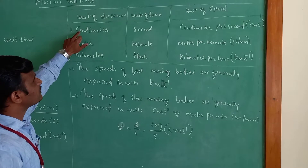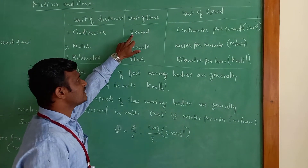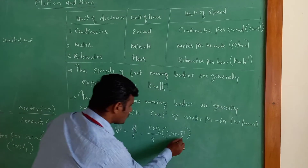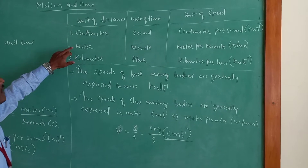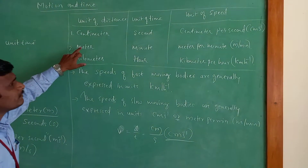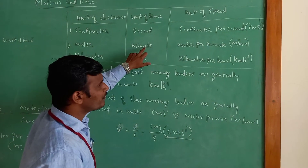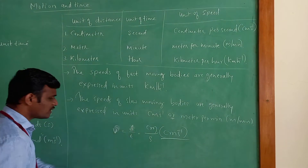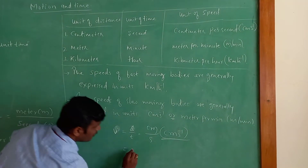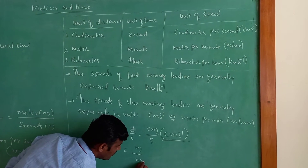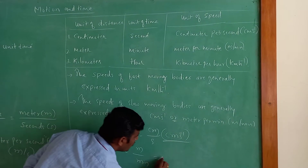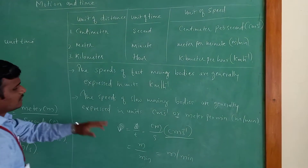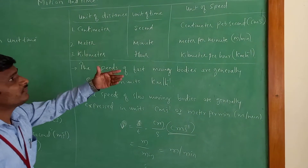For a slow-moving body like a snail, we measure speed in centimetre per second or metre per minute. Now we have discussed speed. The next concept is average speed. Sometimes while on a journey we move very fast and sometimes slow, so we cannot find the exact speed of the vehicle at all times. That is why we use average speed.